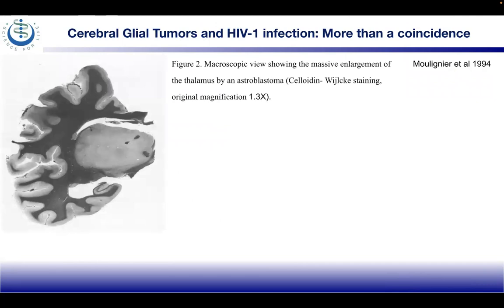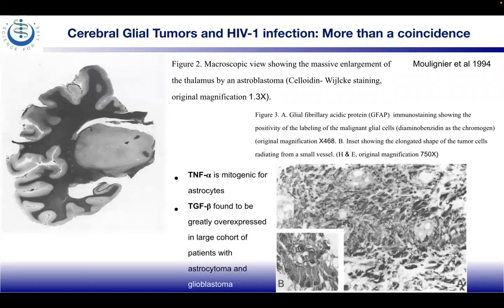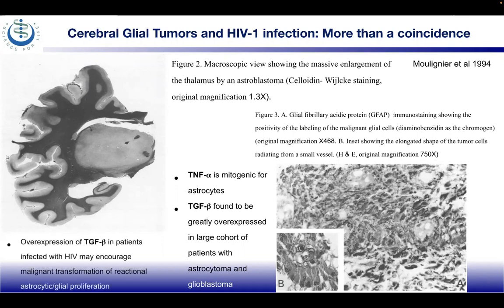Histology shows a macroscopic view of massive enlargement in the thalamus by an astroblastoma at 1.3x, and GFAP (glial fibrillary acidic protein) immunostaining showing positive labeling of malignant glial cells at 750x. TNF-alpha is mitogenic for astrocytes, and TGF-beta is greatly overexpressed in a large cohort of patients with astrocytoma and glioblastoma. Overexpression of TGF-beta in patients infected with HIV may encourage malignant transformation of reactive astrocytic glial proliferation.